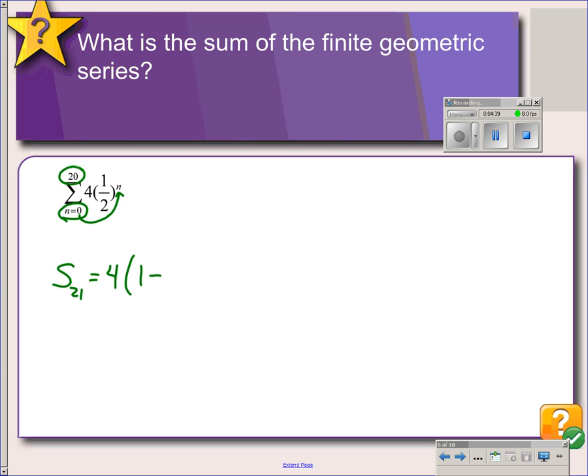Times 1 minus R. R is right there because in your formula it's a sub 1 times R to the n minus 1. So R is that term in parentheses. So we have 1 half, which we're going to raise to the 21st power. And then we're dividing that by 1 minus 1 half.